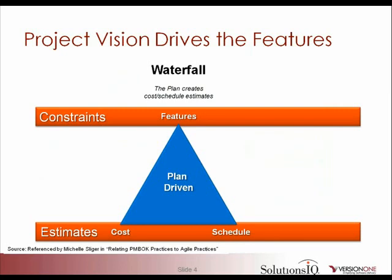One of the first things I want to distinguish for product backlog management is how it differs from a traditional way of thinking. Traditionally, we have looked at our constraints to be our features — we ask our end users, business owners, and other people to tell us all the features they need. Once we have that understanding of features, which we often call requirements, we estimate the cost and schedule, come up with a plan, and execute upon it to deliver all the features the business needs.